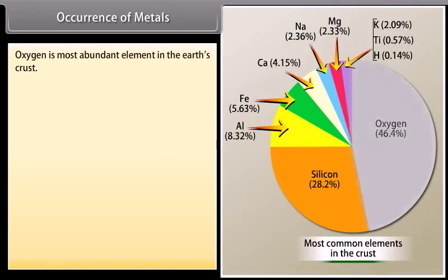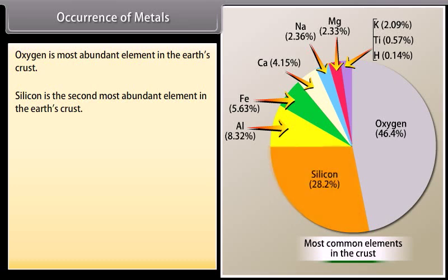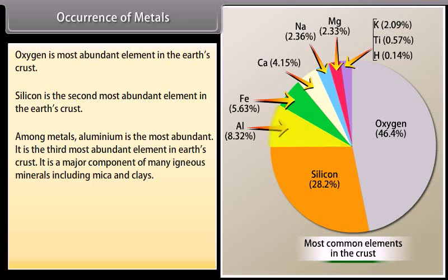Occurrence of metals. Oxygen is the most abundant element in the earth's crust. Silicon is the second most abundant element in the earth's crust. Among metals, aluminum is the most abundant. It is the third most abundant element in earth's crust. It is a major component of many igneous minerals including mica and clay.